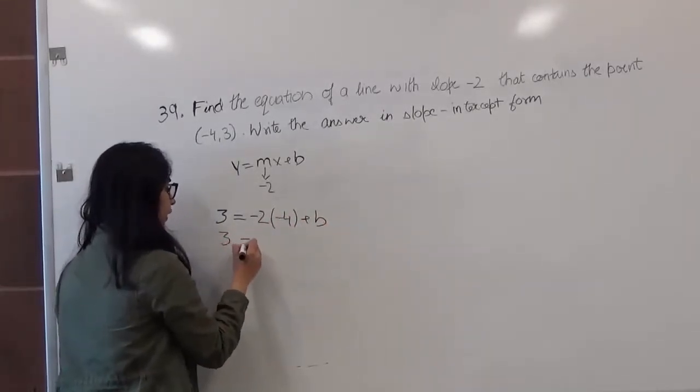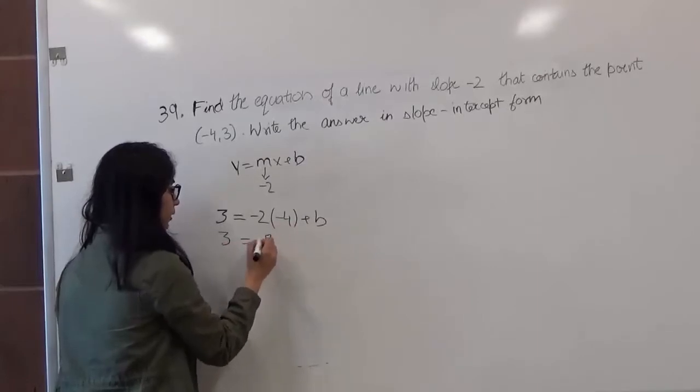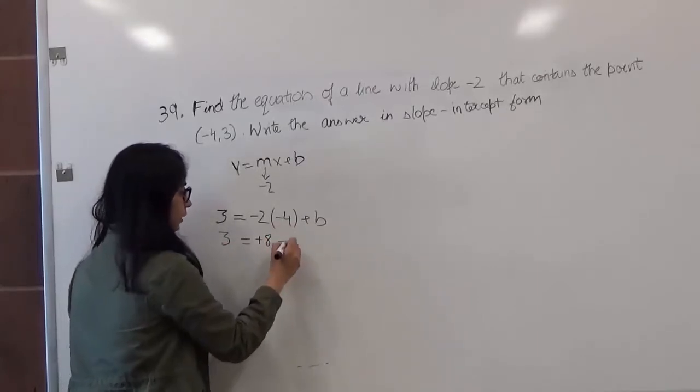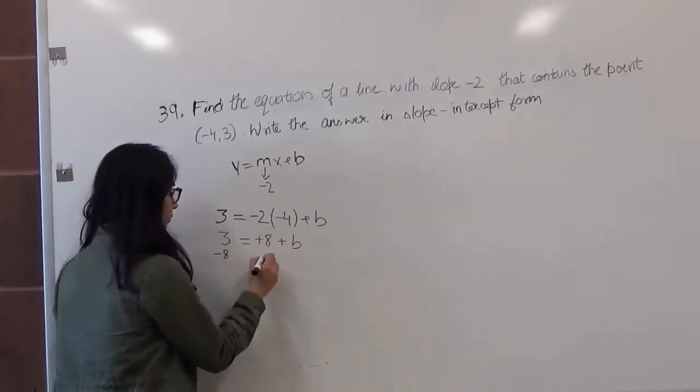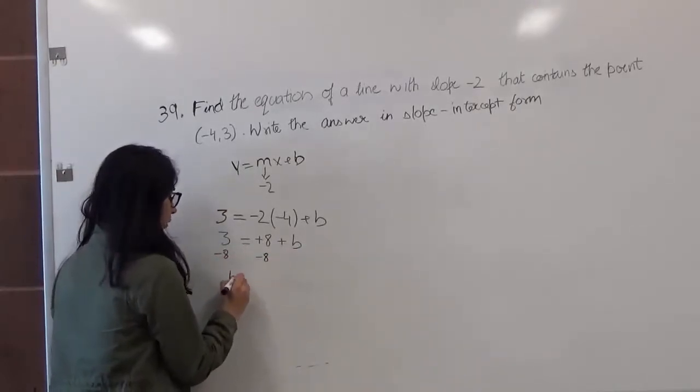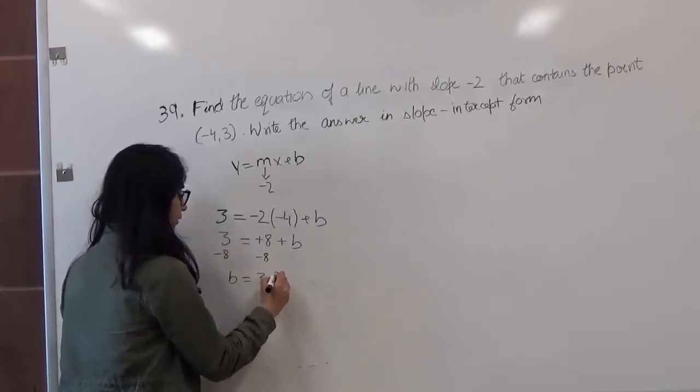So I get 3 = 8 plus b. Now subtracting 8 from both sides, b = 3 - 8, which is -5.